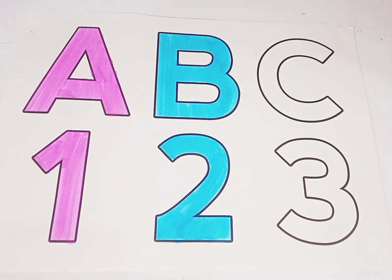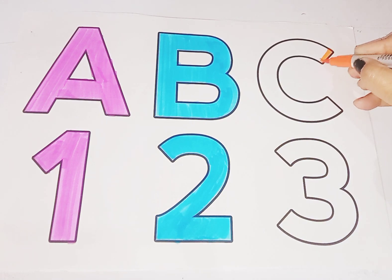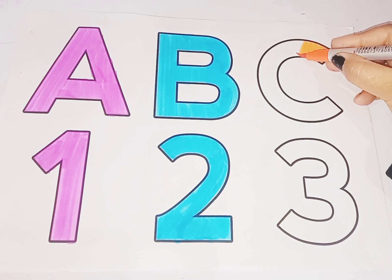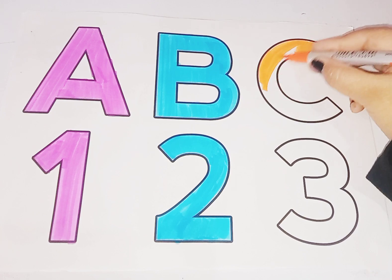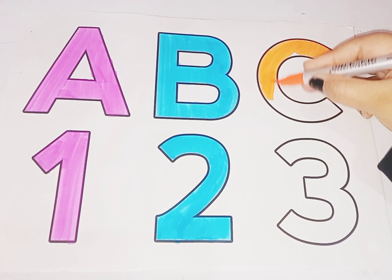Next is orange color, alphabets C. C for cat, C for cow. C for cow. C for cat, C for cow. Alphabet C.